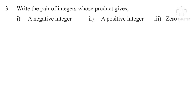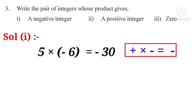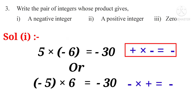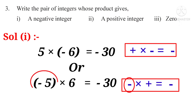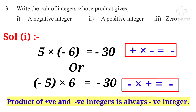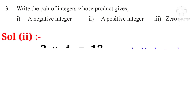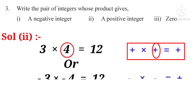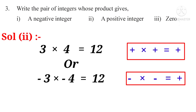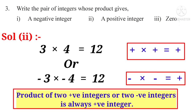Question 3 — Write the pair of integers whose product gives: a negative integer, a positive integer, and zero. Solution 1: To get a negative product, take one positive and one negative — for example, 5 into minus 6 equals minus 30, or minus 5 into 6 equals minus 30. Solution 2: To get a positive product, take both positive or both negative — for example, 3 into 4 equals 12, or minus 3 into minus 4 equals 12. Product of two positive or two negative integers is always a positive integer.